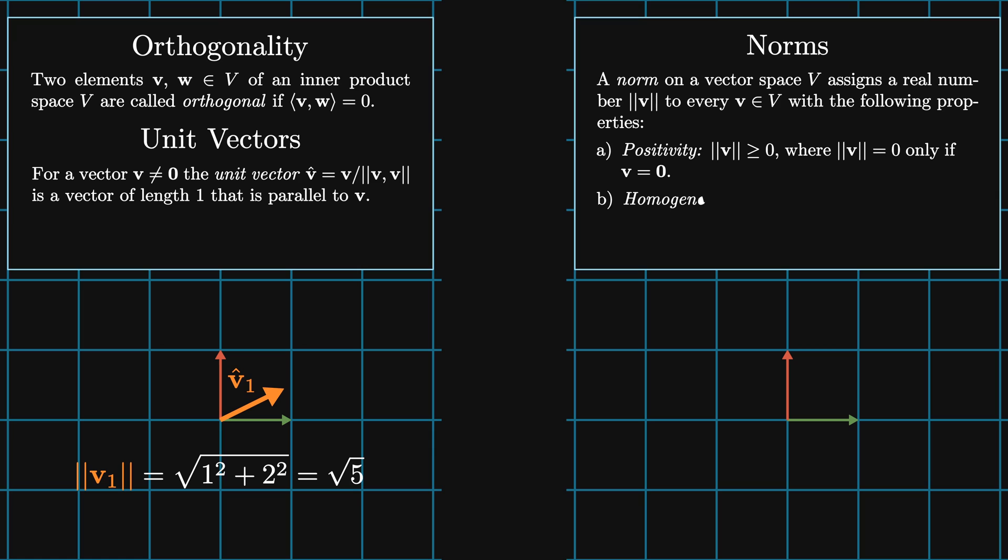Secondly, homogeneity. The norm of a scalar a times a vector v is equal to the absolute value of a times the norm of v. And thirdly, the triangle inequality, where the norm of v plus w is less than or equal to the norm of v plus the norm of w.